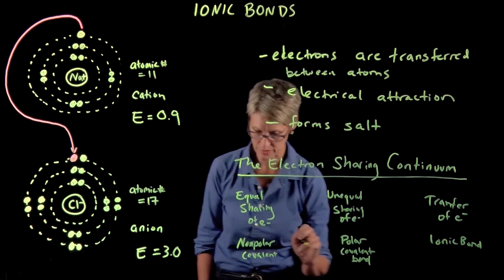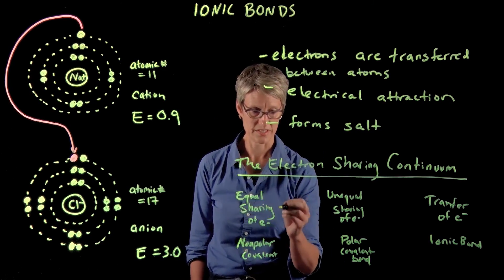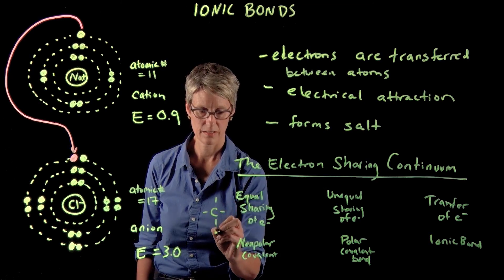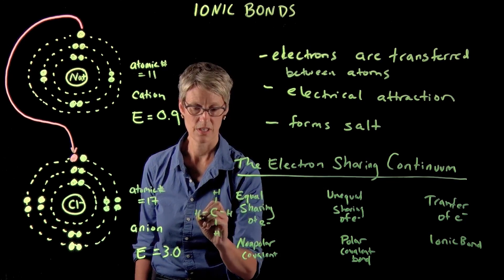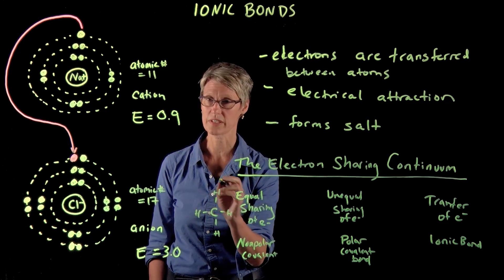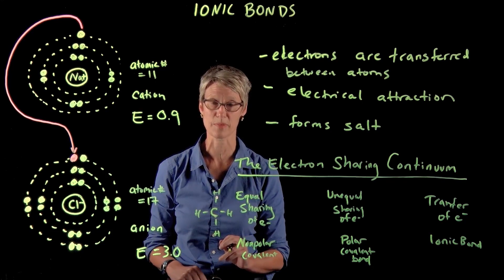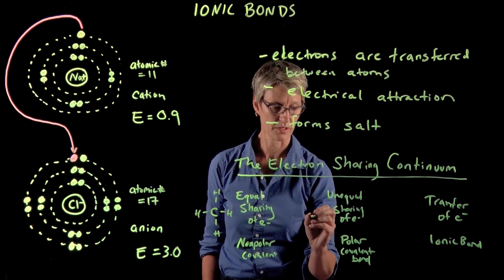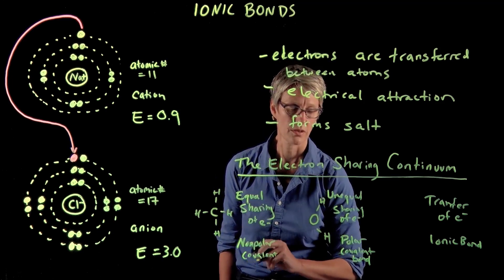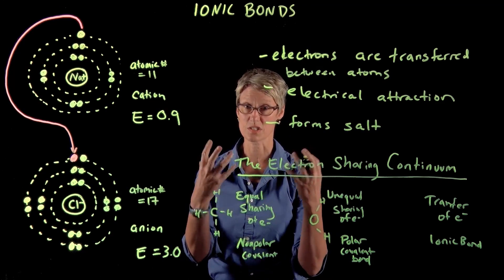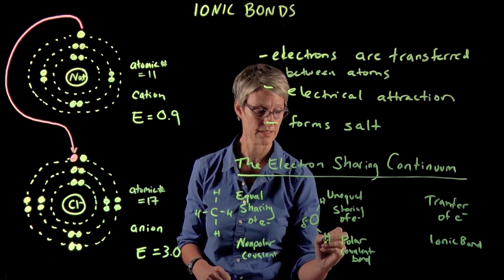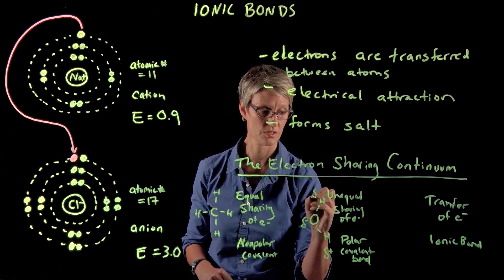Nonpolar covalent bonds we might see in a molecule of methane, where we have bonds between carbons and hydrogens. They have very similar electronegativities, so they share their electrons quite equally — there's no real charge or even partial charge associated with any of the atoms. An example of polar covalent bonds would be in the case of a molecule of water. Oxygen has a much higher electronegativity than hydrogen, so it tends to pull electrons towards it, giving it a partial negative charge (delta minus), and those hydrogens get a partial positive charge.